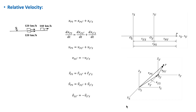This video is a brief description of relative velocity. In the following we will see how different observers moving relative to each other obtain different results when measuring the velocity of a moving object.